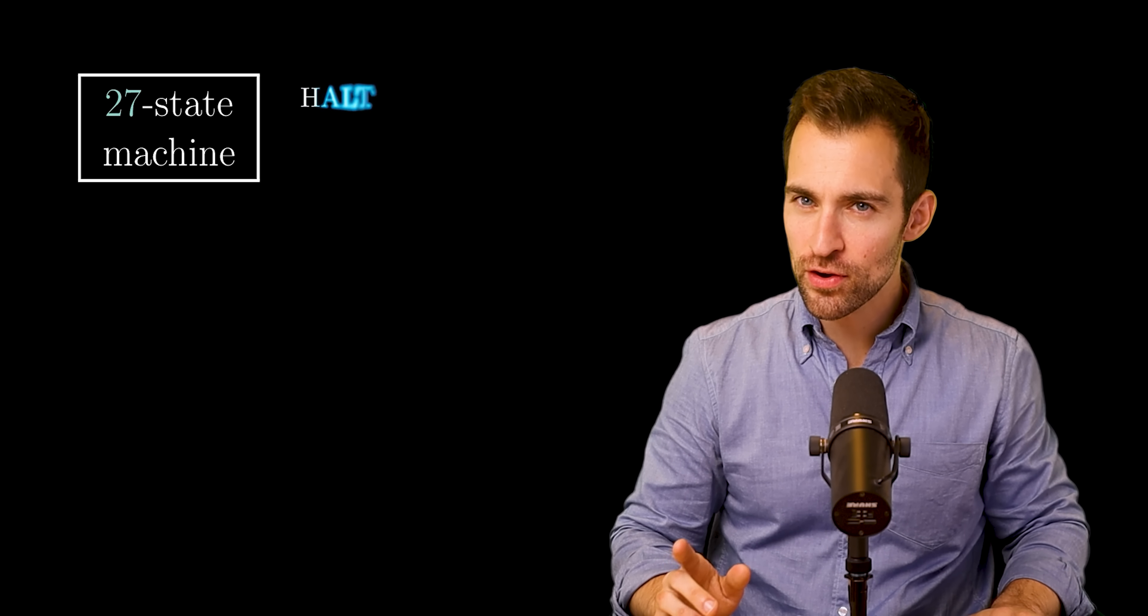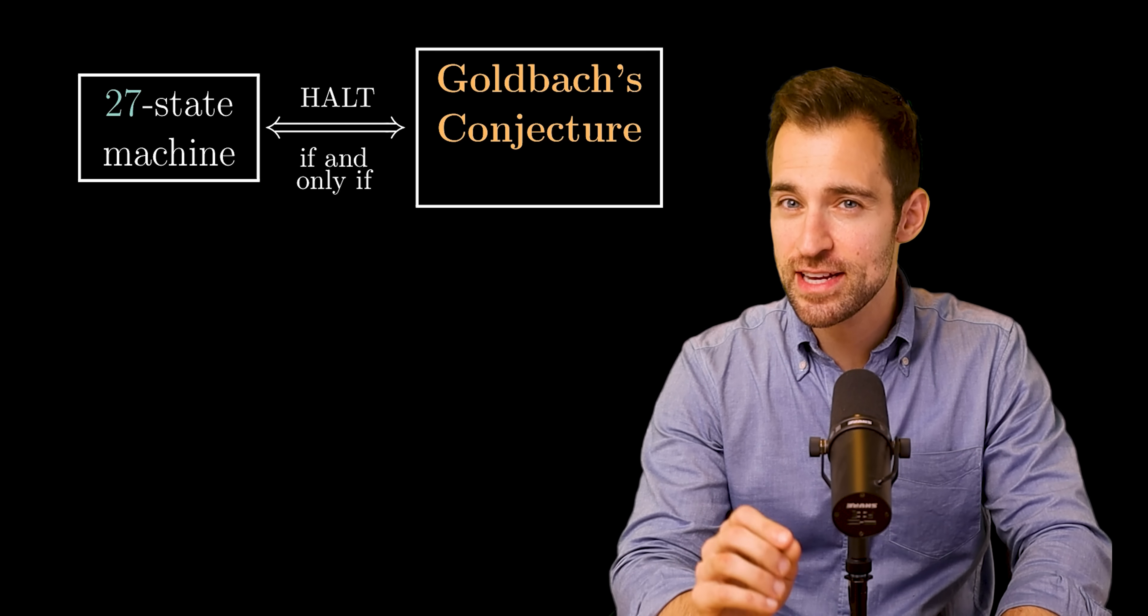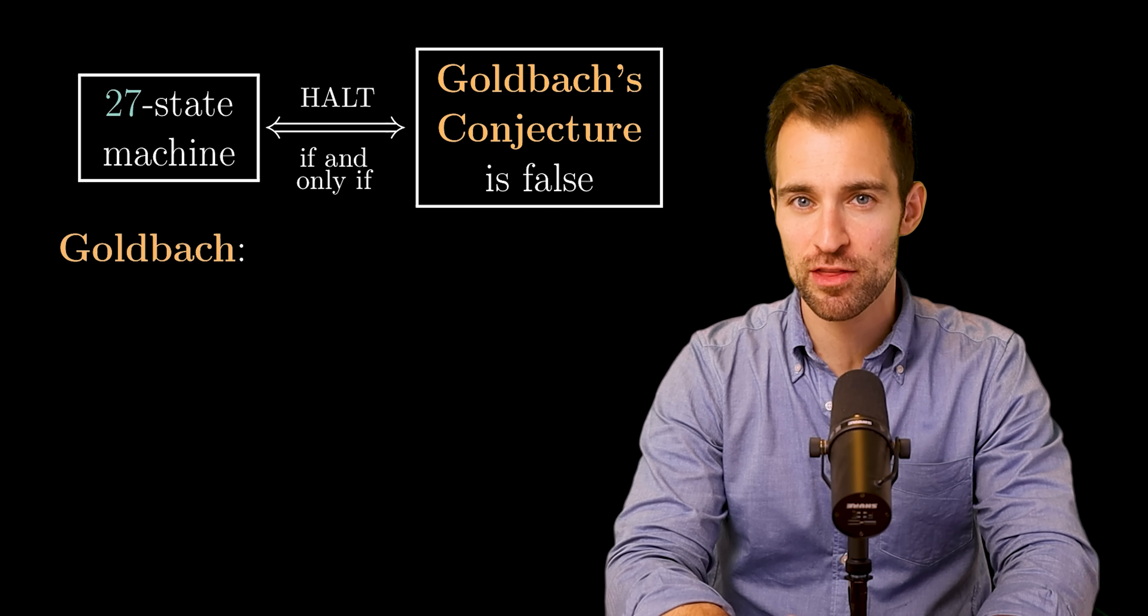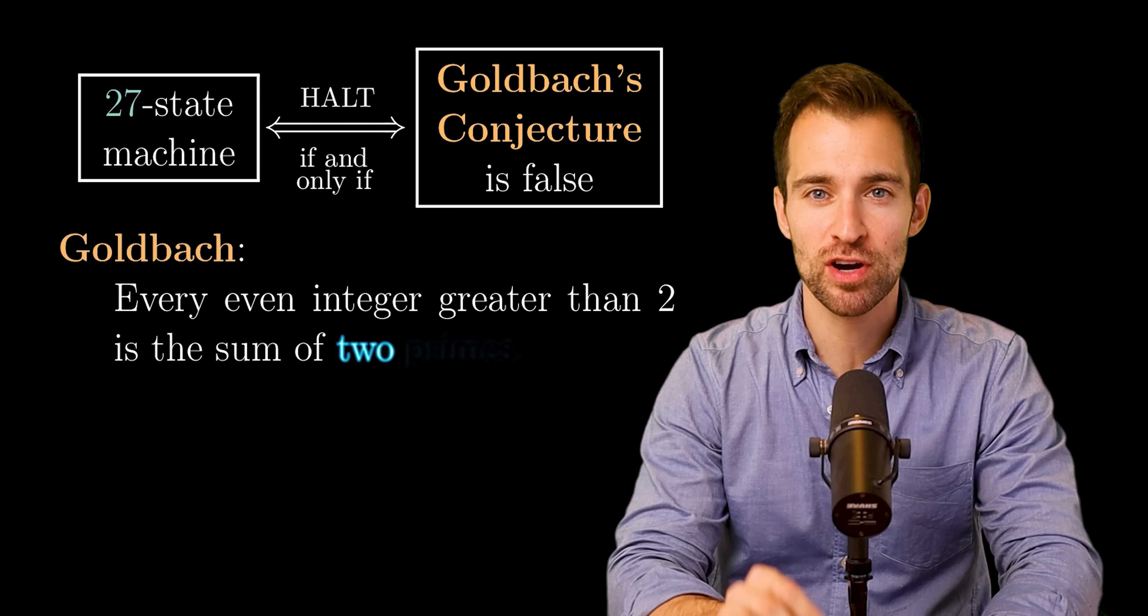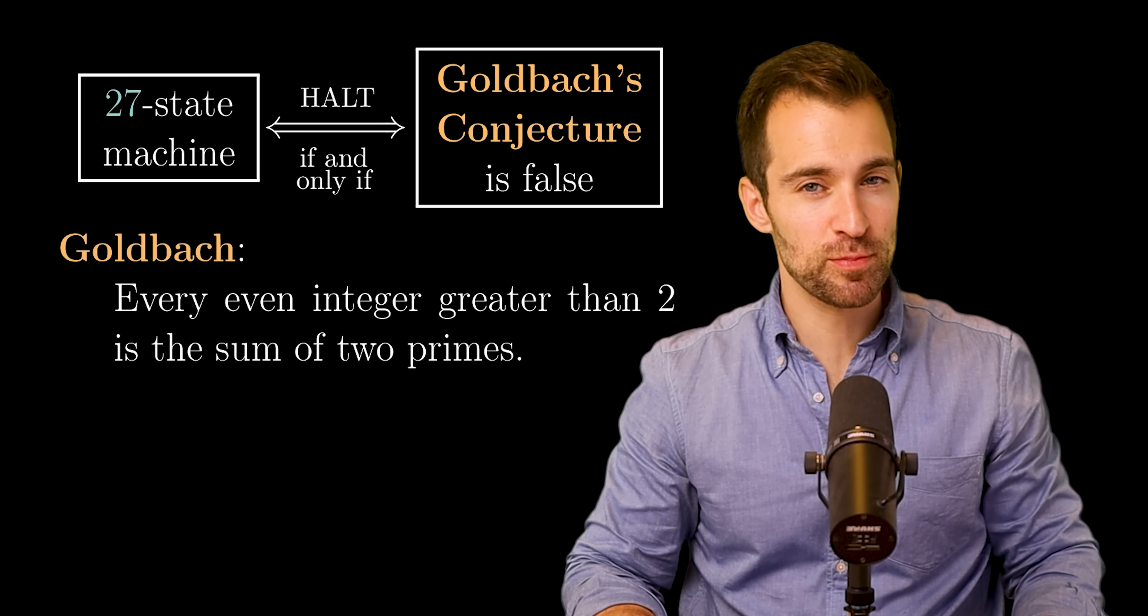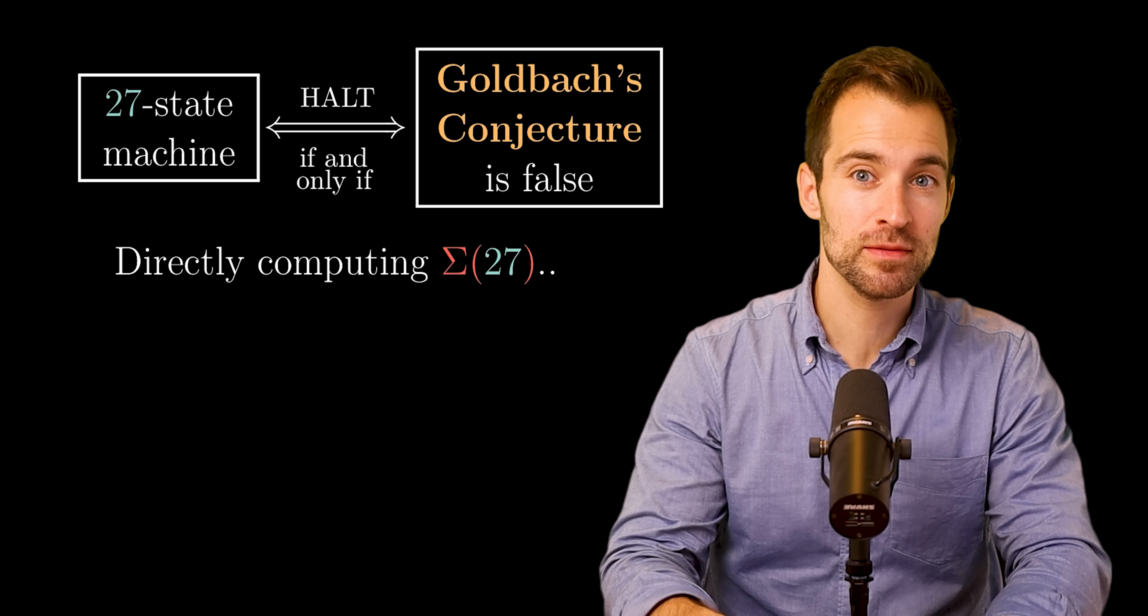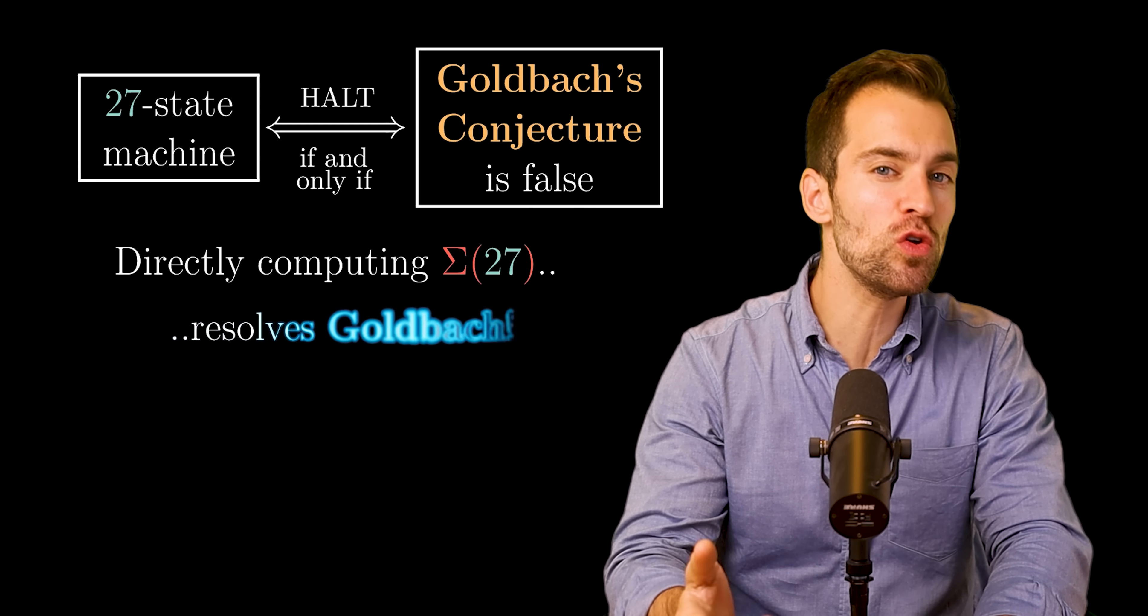And now, things start to get really weird and abstract. It starts with the fact that there exists a 27-state Turing machine that halts if and only if Goldbach's conjecture is false. Goldbach's conjecture is one of the oldest, most famous unsolved problems in mathematics. It states that every even integer greater than 2 is the sum of two primes. And no one in history has been able to prove it. What this means is, if sigma of 27 was computed, the direct way involving deciding which machines halt and which don't, then that would involve resolving Goldbach's conjecture.